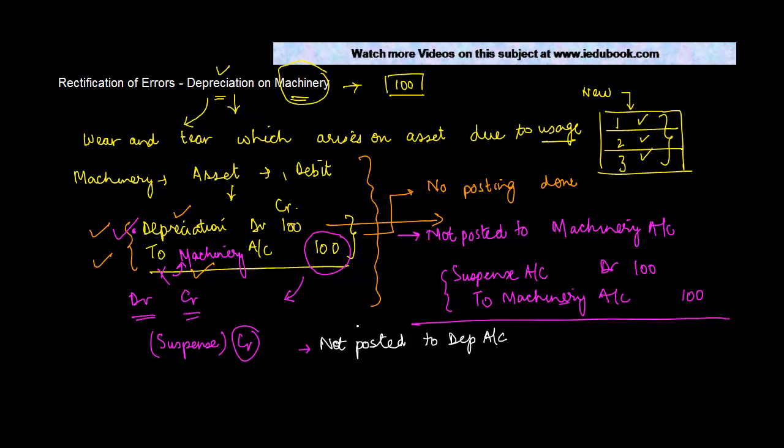So we will debit the depreciation account by 100 and we will credit what? Of course the suspense account. So these are some of the likely errors that can happen in case of depreciation on machinery.